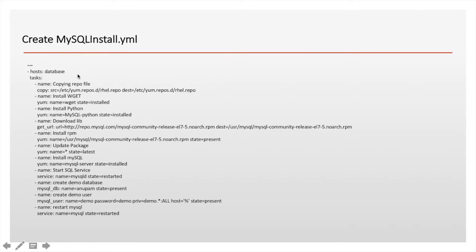This is my MySQL YAML file which is our playbook. In this I'm going to execute the following steps: first is to copy the repo file, where we'll have all our repositories; install wget; install Python, which is used to do other activities like creating databases; download the lib file; install the RPM; install MySQL server; start the service; and create the MySQL database.